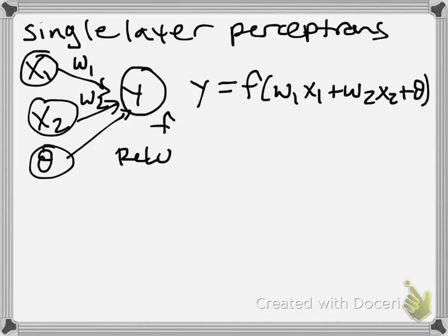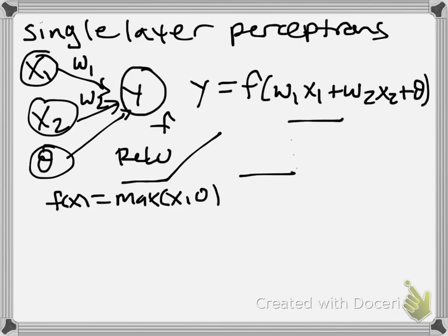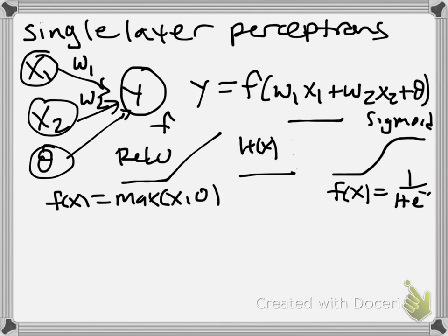And this nonlinearity f can take the form of a rectified linear function, as we've represented before. This is just the function, the max of x and 0, so f(x) equals the max of x and 0. It could be like a Heaviside step function, so h(x), or it could be what's called a sigmoid, because it has this sort of snake-like shape, and f(x) is equal to 1 over 1 plus e to the minus x.